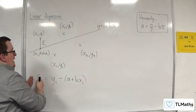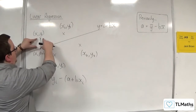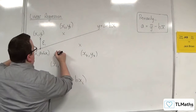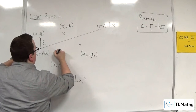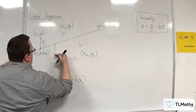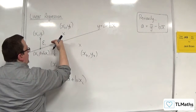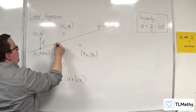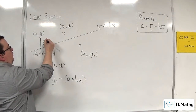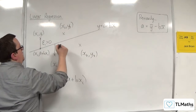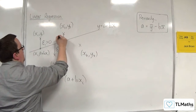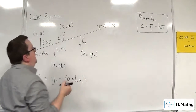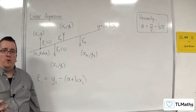The residual is positive here because you've got a larger value take away a smaller value. However, when you work out the residual for this point, you've got y2 take away a plus bx2, so you've got a smaller value take away a larger value, and so this one will be negative. So epsilon 1 will be positive, epsilon 2 will be negative, epsilon 3 will be positive, and epsilon 4 will be negative, because they're appearing above and below the line.